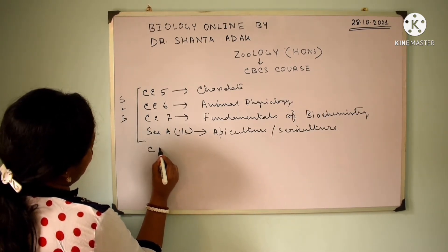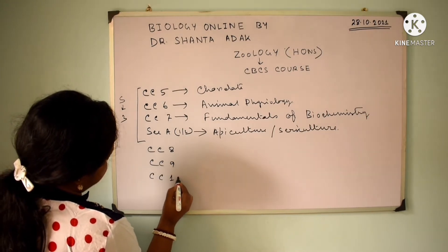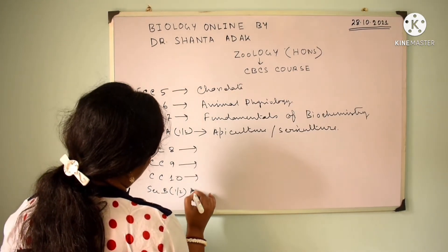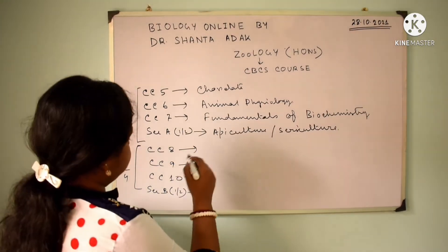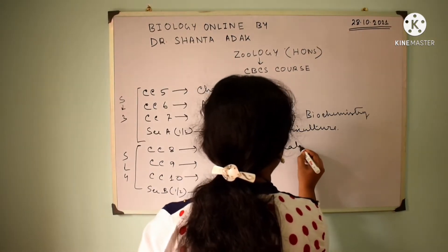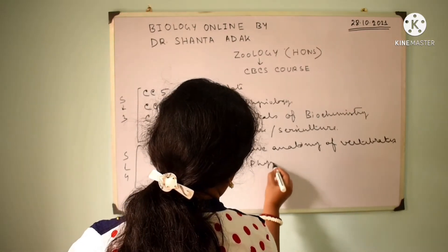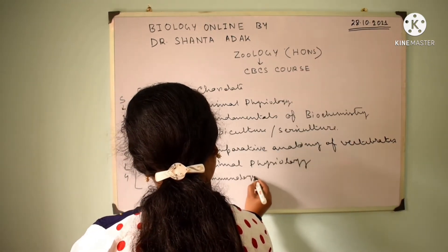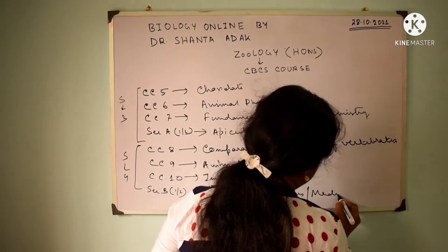Now, Semester 4. CC8, 9, 10, and Set B 1 or 2. In Semester 4, CC8 covers Comparative Anatomy of Vertebrates, CC9 covers Animal Physiology, and CC10 covers Entomology. The elective includes Aquarium Fishery or Medical Diagnosis.